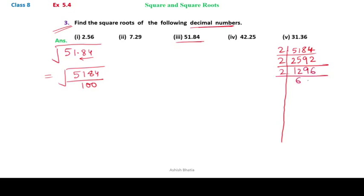2 4s are 8, 2 1s are 2, 2 6s are 12, 2 2s are 4, 2 8s are 16, 2 1s are 2. Again we divide it by 3: 3 2s are 6, 3 7s are 21.